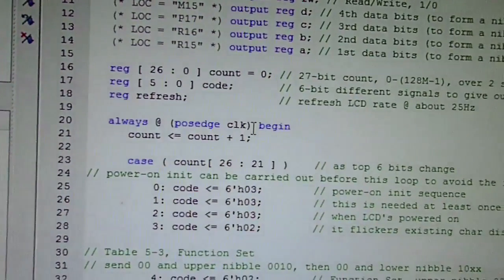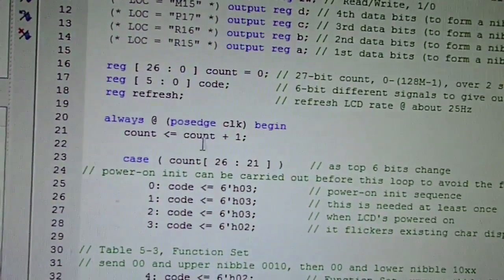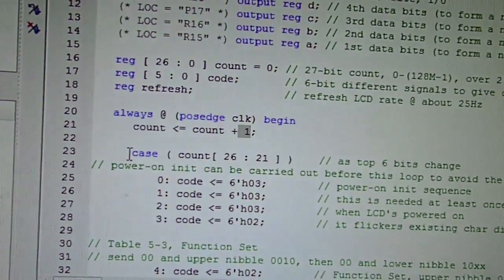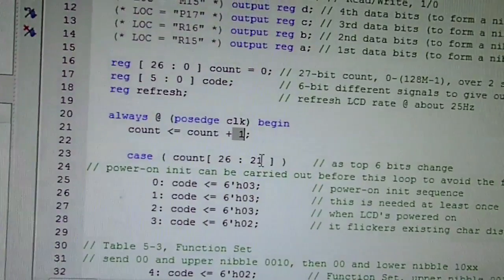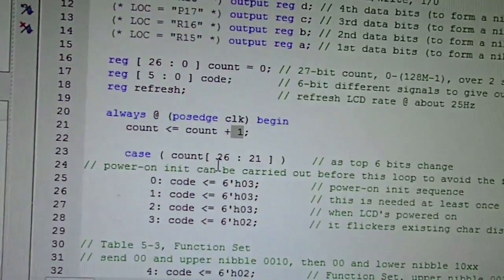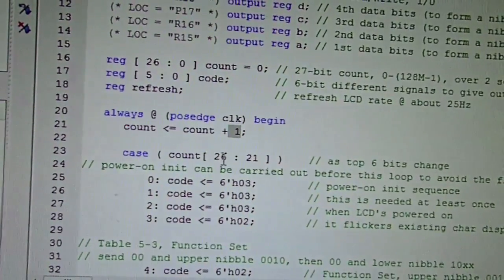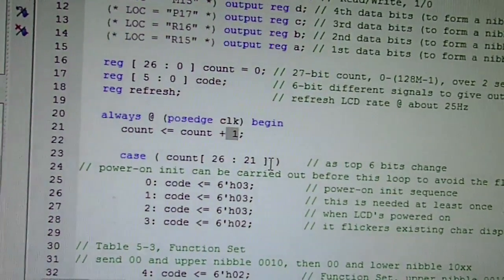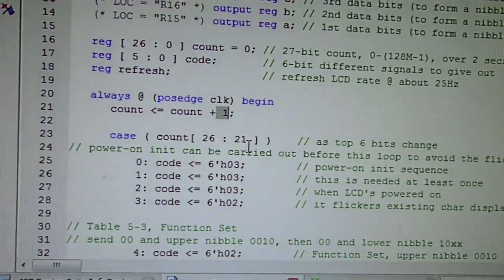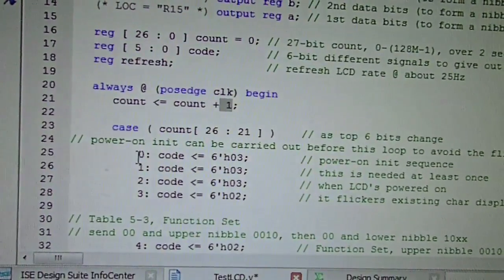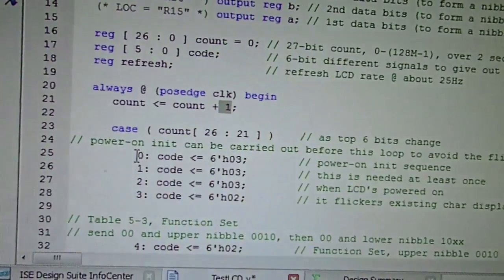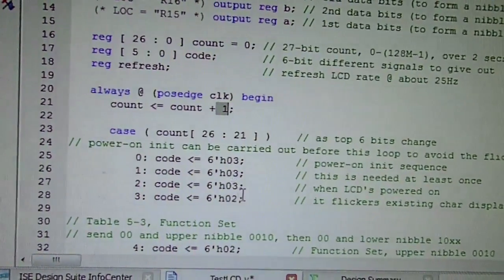Always at the rising edge of the clock, we're going to up-count the counter by one, and then use the top six bits as the event. So the top six bits from bit 26 down to 21 give us 64 different variations, starting from zero, one, two, three, and so forth. We should give out four different codes.